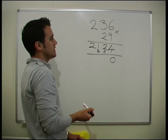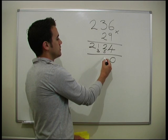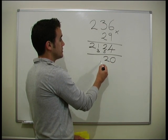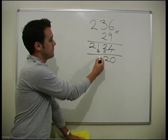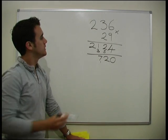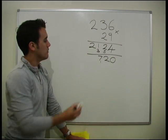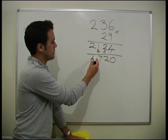So 2 times by 6 is 12. So we put a 2 here, and the 1 carries over. 2 times 3 is 6. Remember the 1. 7. And 2 times 2 is 4. So it's straightforward.